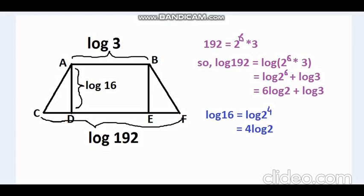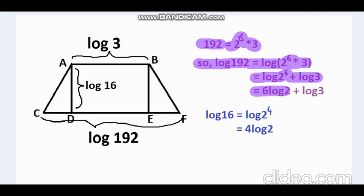First, notice that 192 can be written as 2^6 × 3. So, log 192 equals log(2^6 × 3), which equals log(2^6) + log 3, and this equals 6 log 2 + log 3. Similarly,